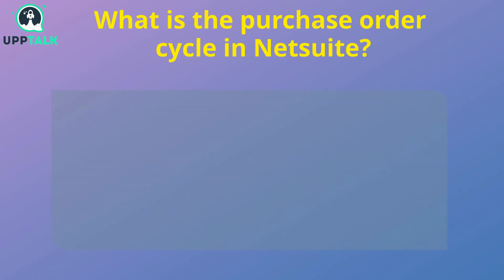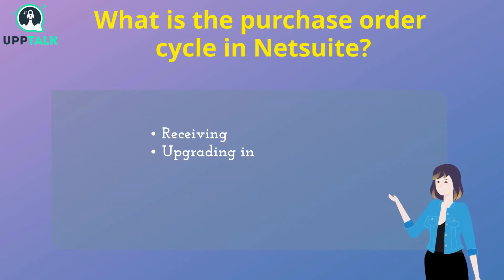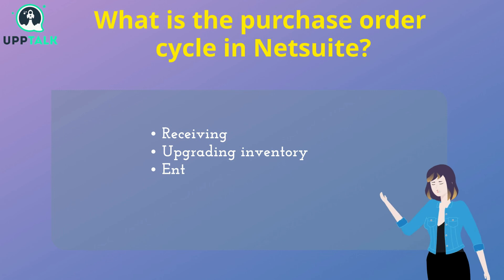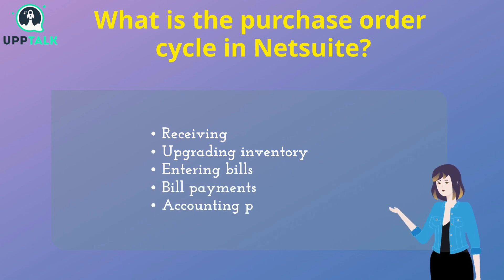What is the purchase order cycle in NetSuite? The steps are: Receiving, upgrading inventory, entering bills, bill payments, and accounting posting.